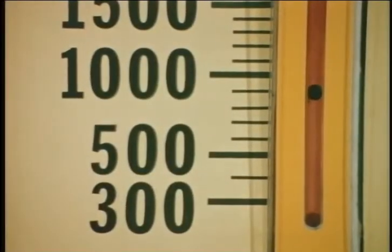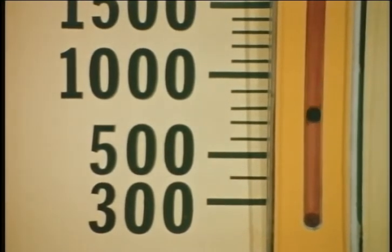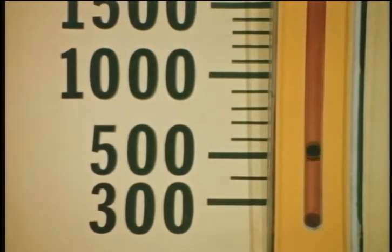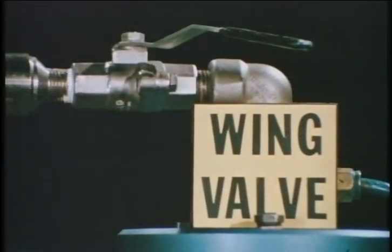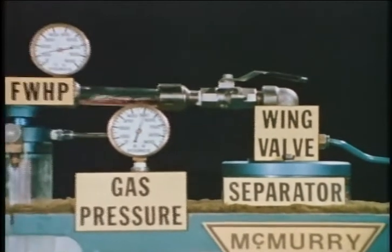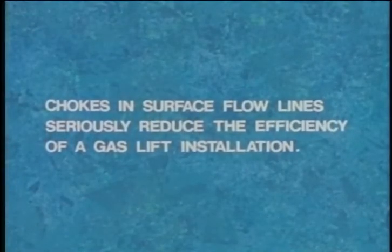Checking our liquid production, we find that it too is fluctuating greatly — from 500 barrels per day to 800 barrels per day, or averaging 650 barrels per day. Compared with the production of 900 barrels per day before the choke was installed, we find that the choke caused a loss of 250 barrels per day. Thus, a choke in the surface flowline will give an increased flowing wellhead pressure, which in turn will reduce production. Also, a choke can cause very erratic well surging. In other words, chokes in surface flowlines seriously reduce the efficiency of a gas lift installation.